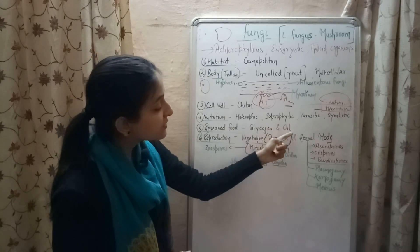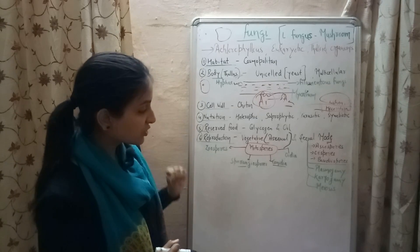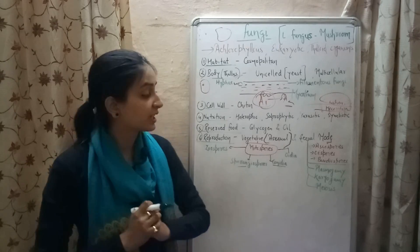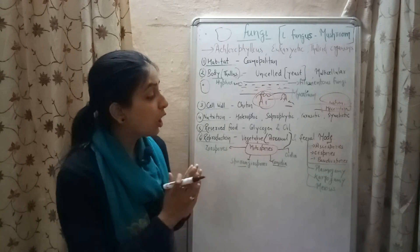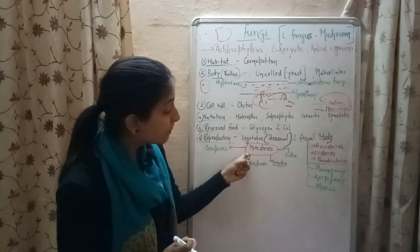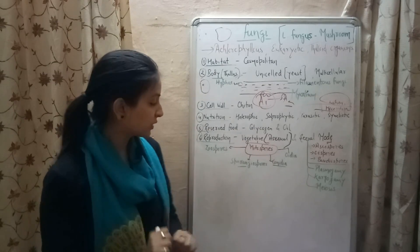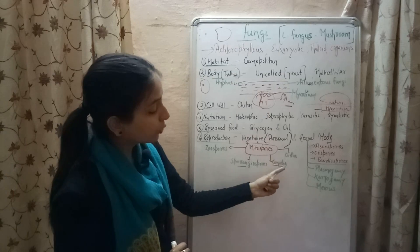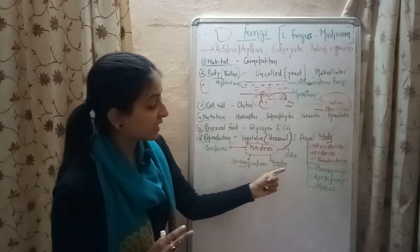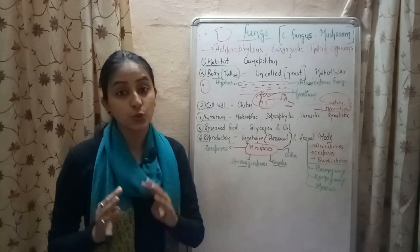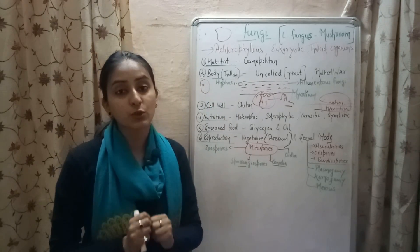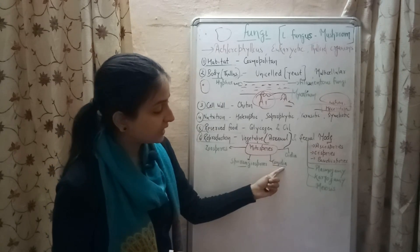Reserve food is glycogen and oil in case of fungi. Reproduction की बात करें, तो fungi kingdom में organisms sexual और asexual reproduction दोनों show करते हैं. Asexual reproduction vegetative propagation के through होता है, और asexual reproduction spores के through होता है. इन spores को बोलते हैं mitospores. चार types के mitospores होते हैं: zoospores, sporangiospores, conidia, and oidia. इनमें से sporangiospores and conidia are the most common asexual spores used by fungi.